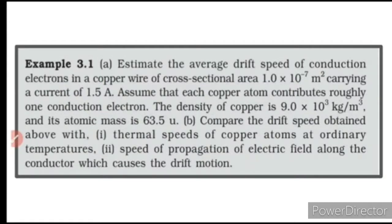Let's discuss one example. Estimate the average drift speed of conduction electrons in a copper wire of cross-sectional area 1×10⁻⁷ m² carrying a current of 1.5 ampere. Assume that each copper atom contributes roughly one conduction electron. Density of copper is 9×10³ kg/m³ and its atomic mass is 63.5 U.